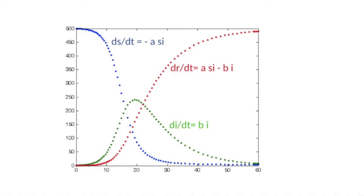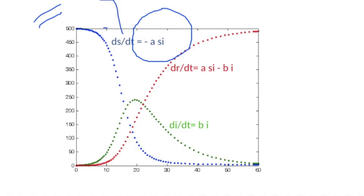The susceptible population is represented as a negative constant in the equation. For example, assume a cluster of 500 people. At the start of an epidemic, everyone is susceptible. As infections increase, the susceptible population decreases — they either move into the infectious cluster or into the recovery cluster. Hence it is a negative number.